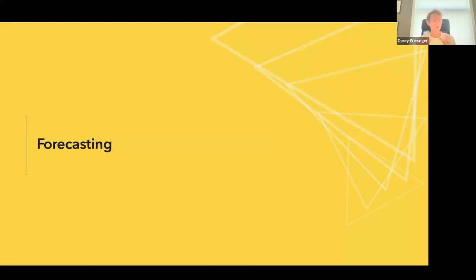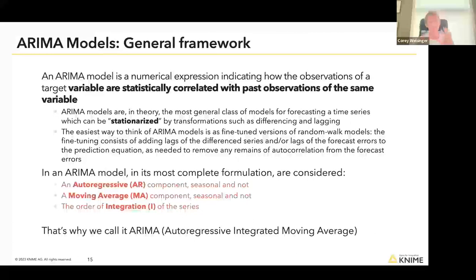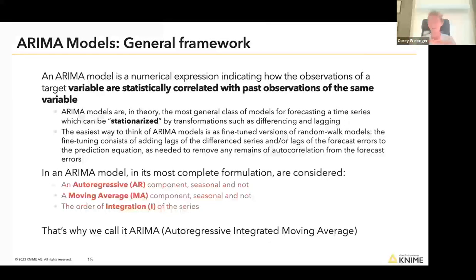We've talked about a time series, talked about its components, and introduced the classical decomposition component as a way to break that down inside a KNIME workflow. Now, what do we do once we get there? The model we talk about a lot with KNIME is the SARIMA model or ARIMA model. ARIMA stands for Autoregressive Integrated Moving Average model — it's a big name, but it's a pretty standard best practice in forecasting. It's certainly not the only option available, but it's a very standard model to use in this setting.